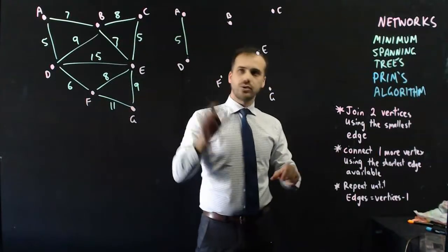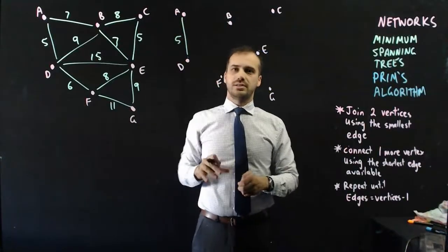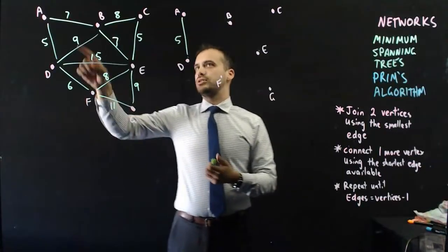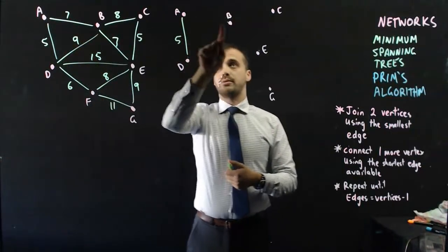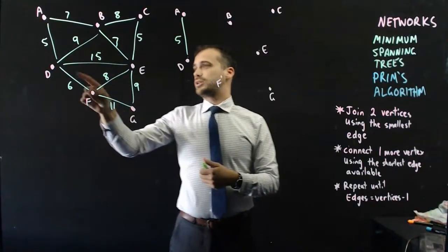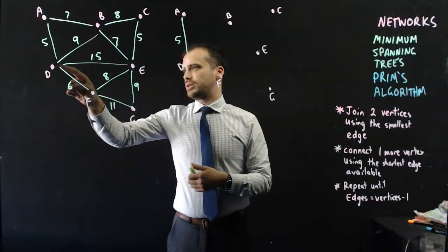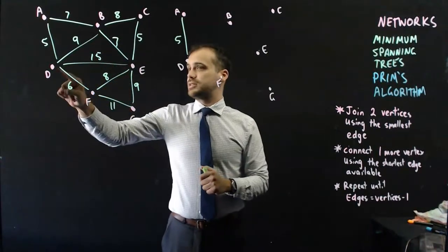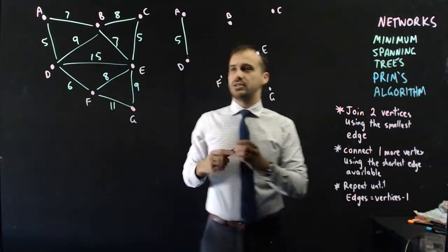Now, connect one more vertex, connect B, F, E, C, or G to A to D using the shortest edge available. I could A. A connects to B with 7. I could connect D to B with a 9. That's not great. I could connect D to E with a 15. That's terrible. Or, I could connect D to F with a 6. 6 is smaller than 7, so let's use 6.